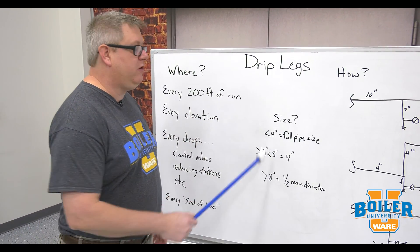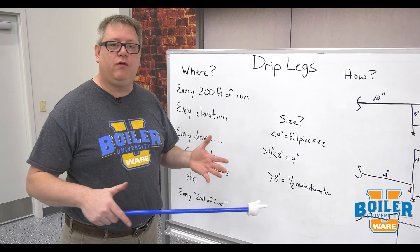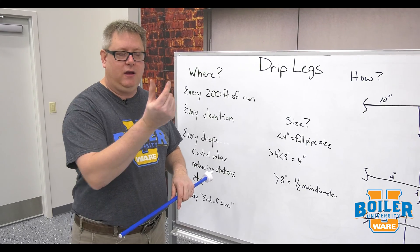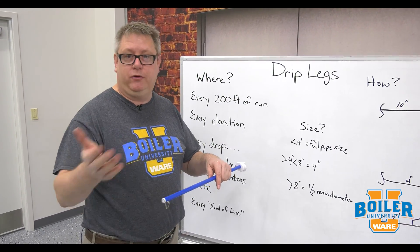Anything under 4 inches, we want to do a full-size drip leg. Over and over again I will see a 3/4-inch weld-a-let in the bottom of a 4-inch pipe that's supposed to be a drip leg.